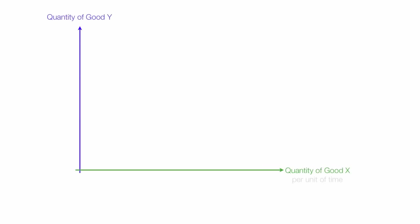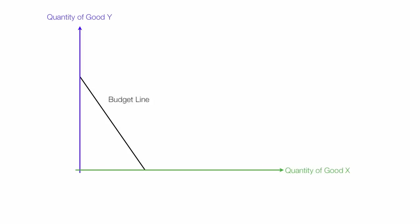Along the x-axis I will plot quantity of good X, and along the y-axis quantity of good Y — this is really per unit of time, but I will drop that. I'll draw in the budget line — it's the black line there. The equation for the budget line is: total income equals the quantity of good X times the price of good X, plus the quantity of good Y times the price of Y.